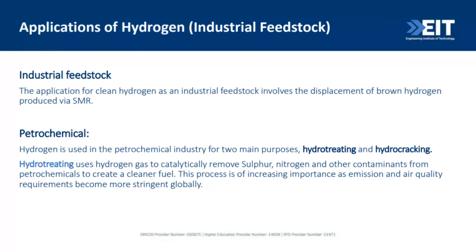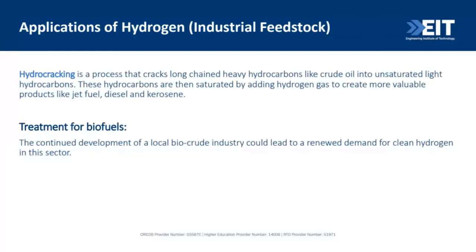In the petrochemical industry, hydrogen is used in two key processes: hydrotreating and hydrocracking. In hydrotreating, hydrogen removes sulfur, nitrogen, and other contaminants from petrochemicals to create cleaner fuels. In hydrocracking, long-chain heavy hydrocarbons like crude oil are cracked into unsaturated light hydrocarbons and then saturated by adding hydrogen gas to create more valuable products like jet fuel, diesel, and kerosene. Hydrogen is also used in the treatment of biofuels, though this is still a developing area.